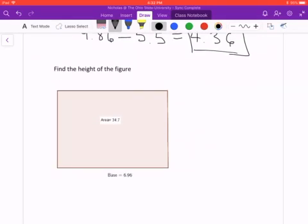All right, so this next one gives us a rectangle, and it tells us to find the height of the figure. It gives us an area of 34.7, and it tells us the base, the value of the base is 6.96. Remember that the area of a rectangle is equal to the base times the height.